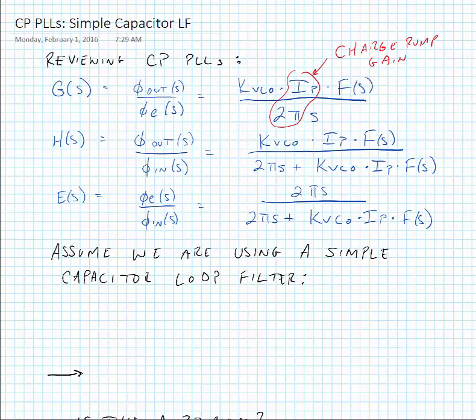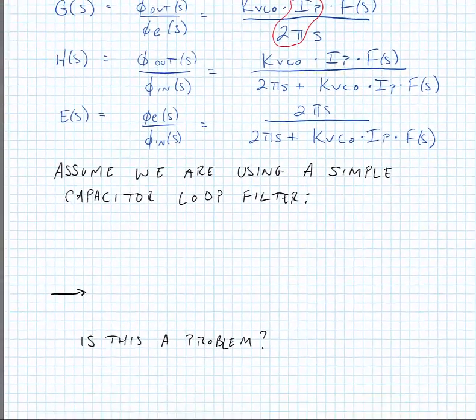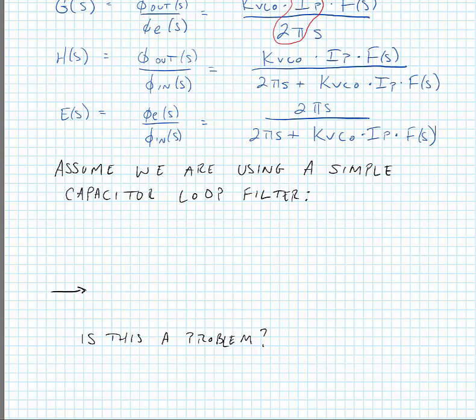We see that these transfer functions are a function of the loop filter transfer function, and let's consider our simple capacitor loop filter. Now recall that the transfer function we're looking for in the charge pump type of PLL is a voltage out divided by a current in. So we're looking for F of S to equal V out of S over I in of S. This is an impedance, and it's just the impedance of the capacitor in this case, so it's 1 over SC.